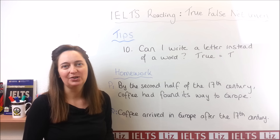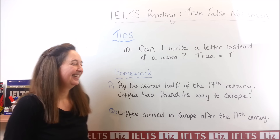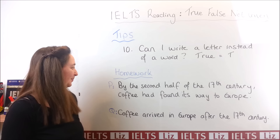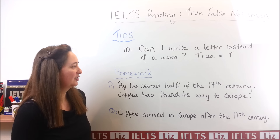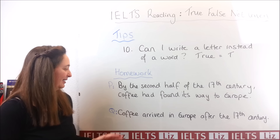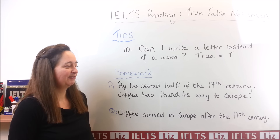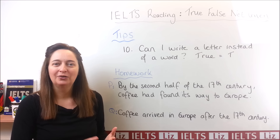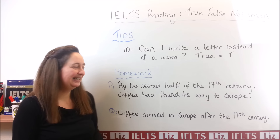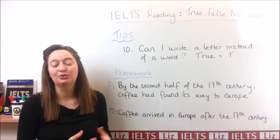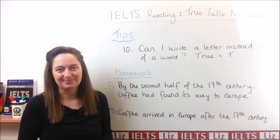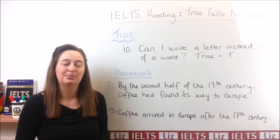Now before we finish, here's your homework. This is a true, false, not given question. This is the information in the passage: 'By the second half of the 17th century, coffee had found its way to Europe.' And here is the question: 'Coffee arrived in Europe after the 17th century.' I want you to decide: is it true, false, or not given? I will give you a link to find the answer to your homework, a link so you can practice more true, false, not given and yes, no, not given questions for free, and also links to other IELTS lessons. I hope that was useful for you. If you did find it useful, please press like. If you have any questions, just post them for me. See you soon.